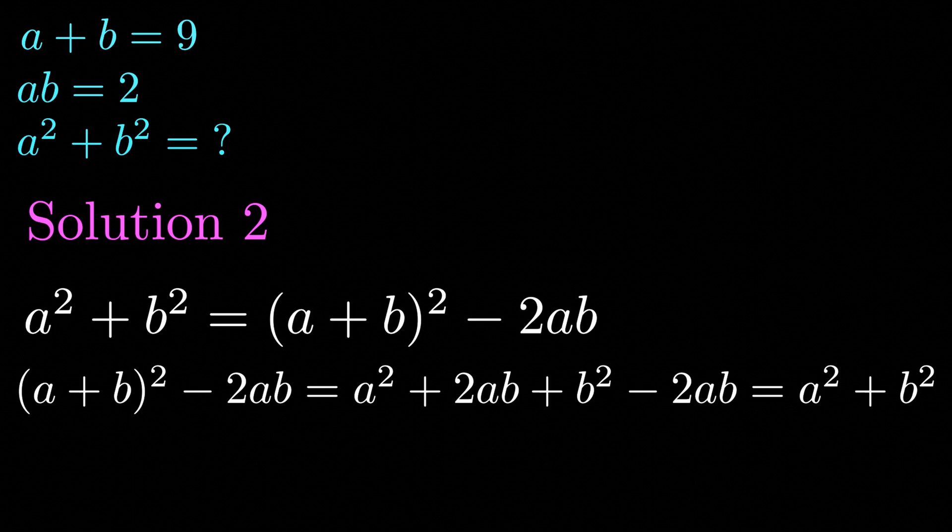Which is equal to a squared plus b squared. And as you can see all we really need to do is plug in the values for ab and a plus b and that's why this solution is a much more efficient way to solve this problem when compared to the first.